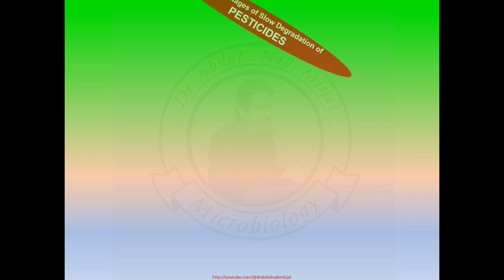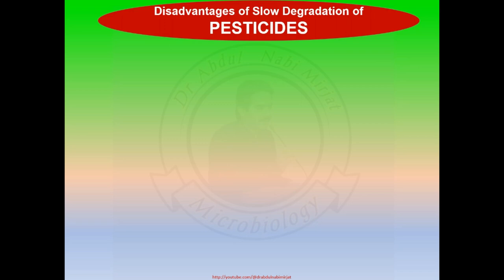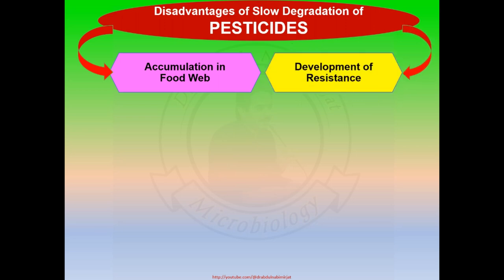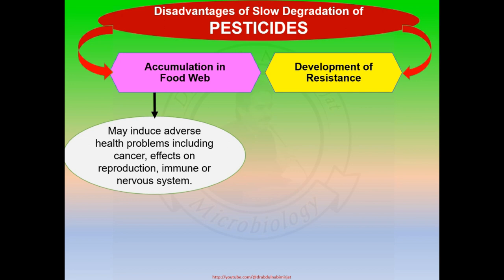Disadvantages of slow degradation or non-biodegradation may result in accumulation of pesticides in the food web and development of resistance among pest organisms. Accumulation of pesticides in the food web may induce highly adverse health problems including cancer and effects on reproduction, immune, or nervous systems. Before use, pesticides must be examined or tested for possible health effects on humans by an expert team.